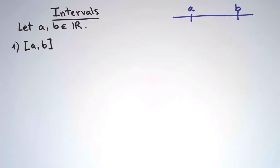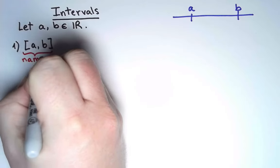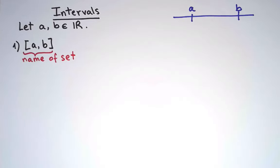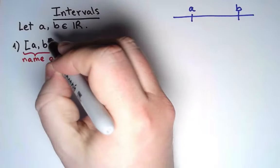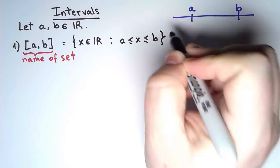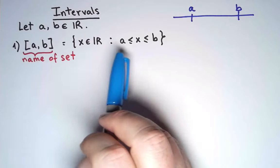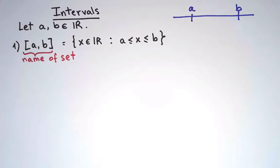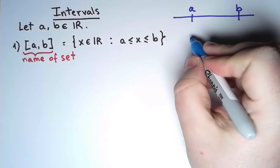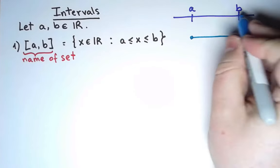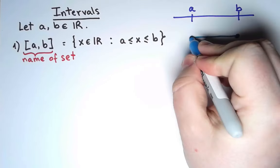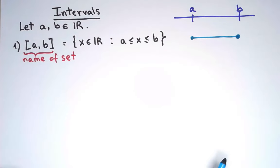Now, this thing I've written here, bracket a comma b bracket, is actually the name of the set. And the description of this set is as follows. This is the set of real numbers, which are between a and b, where both of them are included. So geometrically, if this is a real line, this set would be this segment, with both endpoints included.